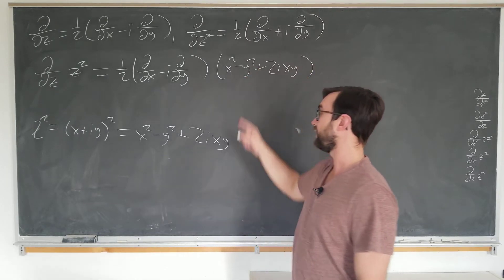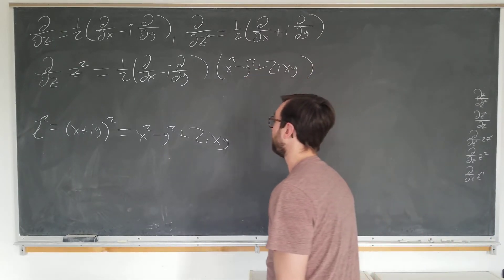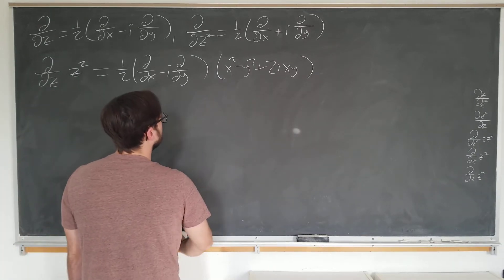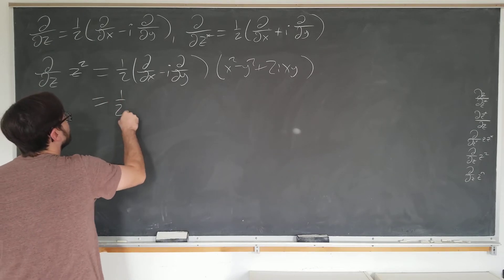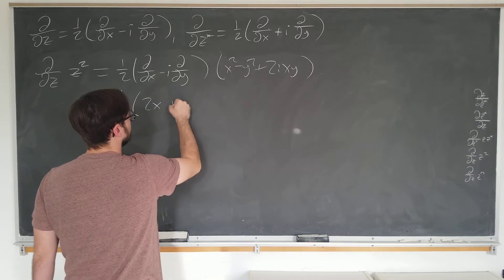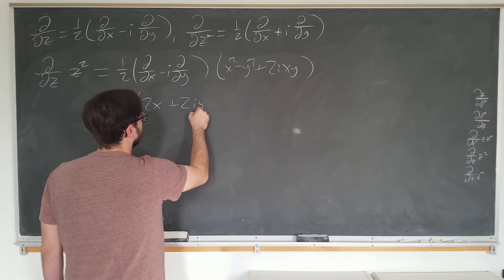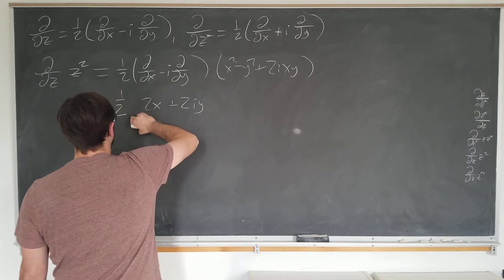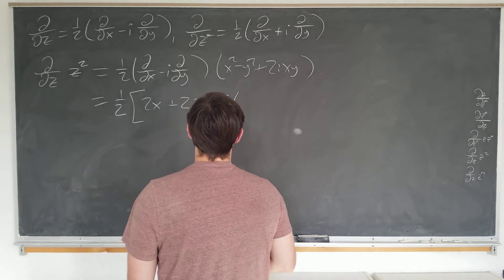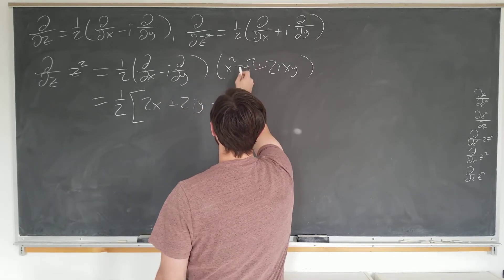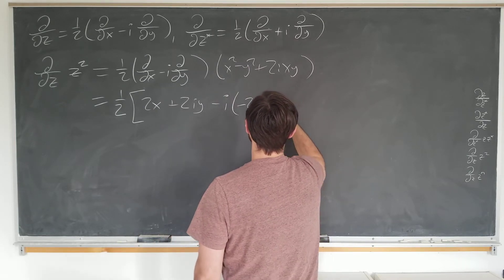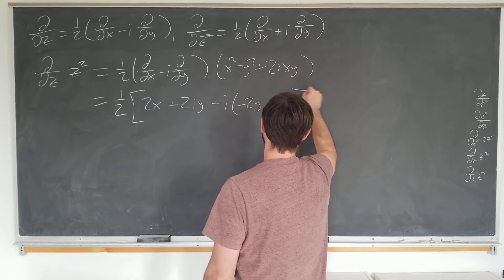Of course, the minus sign here comes from the fact that i squared is negative one by definition. All right, if we do this, one half: the x term gives us a 2x from this term and a 2i y from the second term. So the i d by dy operator gives us a minus 2y from the first term and a plus 2i x from the second term.